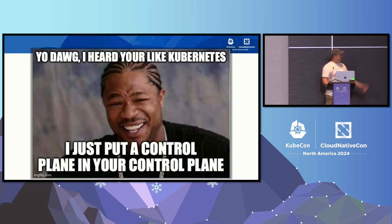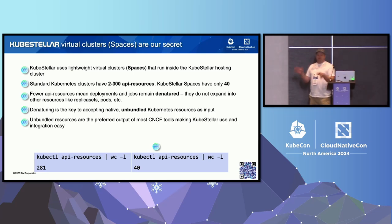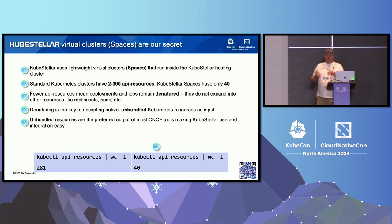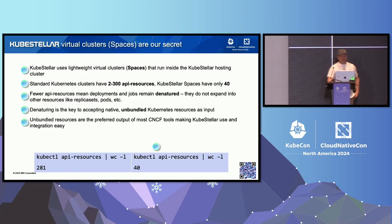I like to show this — it's an oldie but a goodie. What did we do? We put a control plane inside a control plane. Standard Kubernetes uses about two to three hundred API resources. We stripped that down to about 40 basic Kubernetes resources. So when I deploy a workload, it doesn't blow up into a pod at the hub level. When it gets deployed to the remote cluster, that's when it unfurls and becomes a real job or proper workload. We did this by denaturing the workloads — the APIs for jobs and pods simply don't exist at the hub.